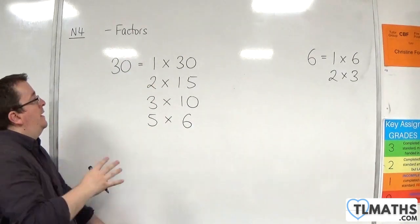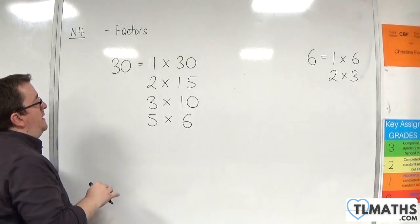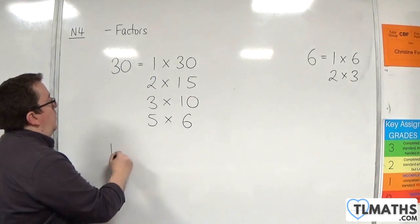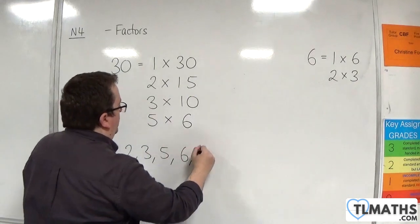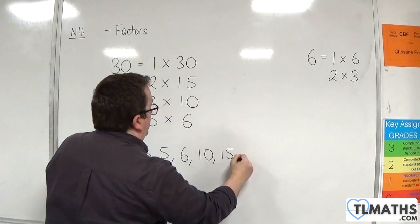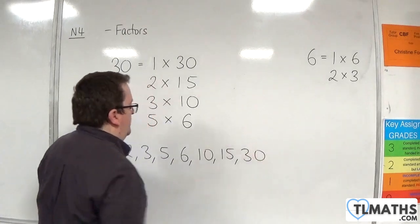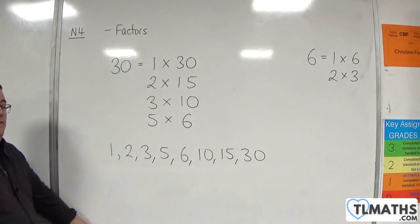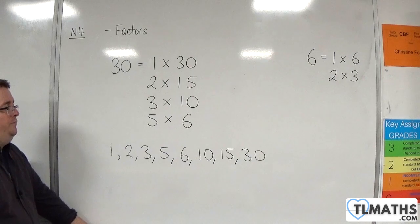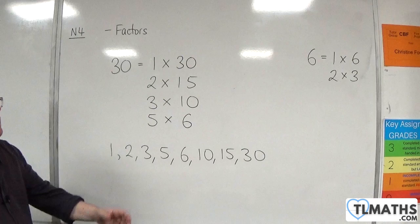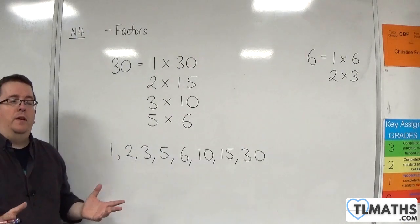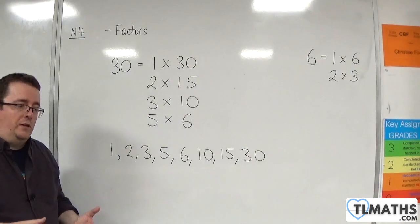I have found all of the factors of 30. The factors of 30 are 1, 2, 3, 5, 6, 10, 15, and 30. They are the factors of 30. Doing it in this way really saves time and is a good way of laying out your work.